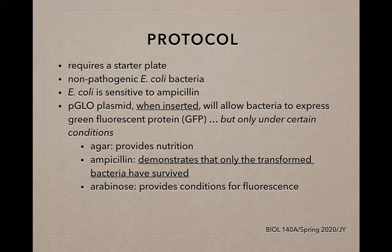Regarding the conditions, the smaller petri plates may contain agar providing nutrition, agar and ampicillin, or agar with arabinose sugar. Ampicillin is important because it demonstrates that only transformed bacteria have survived — it will inactivate and destroy untransformed bacteria, while transformed bacteria survive. Arabinose sugar, included in certain plates, provides conditions for fluorescence.